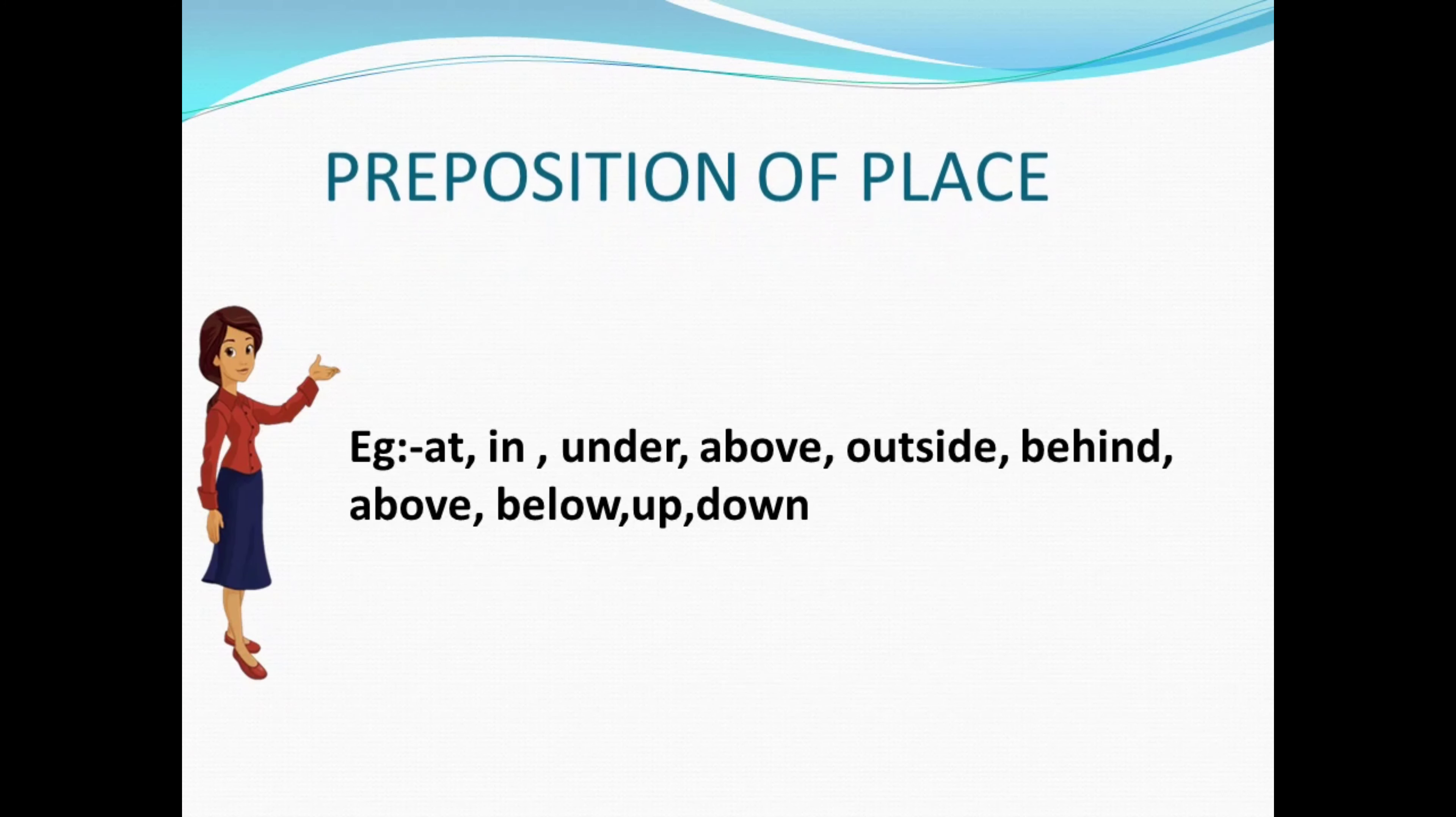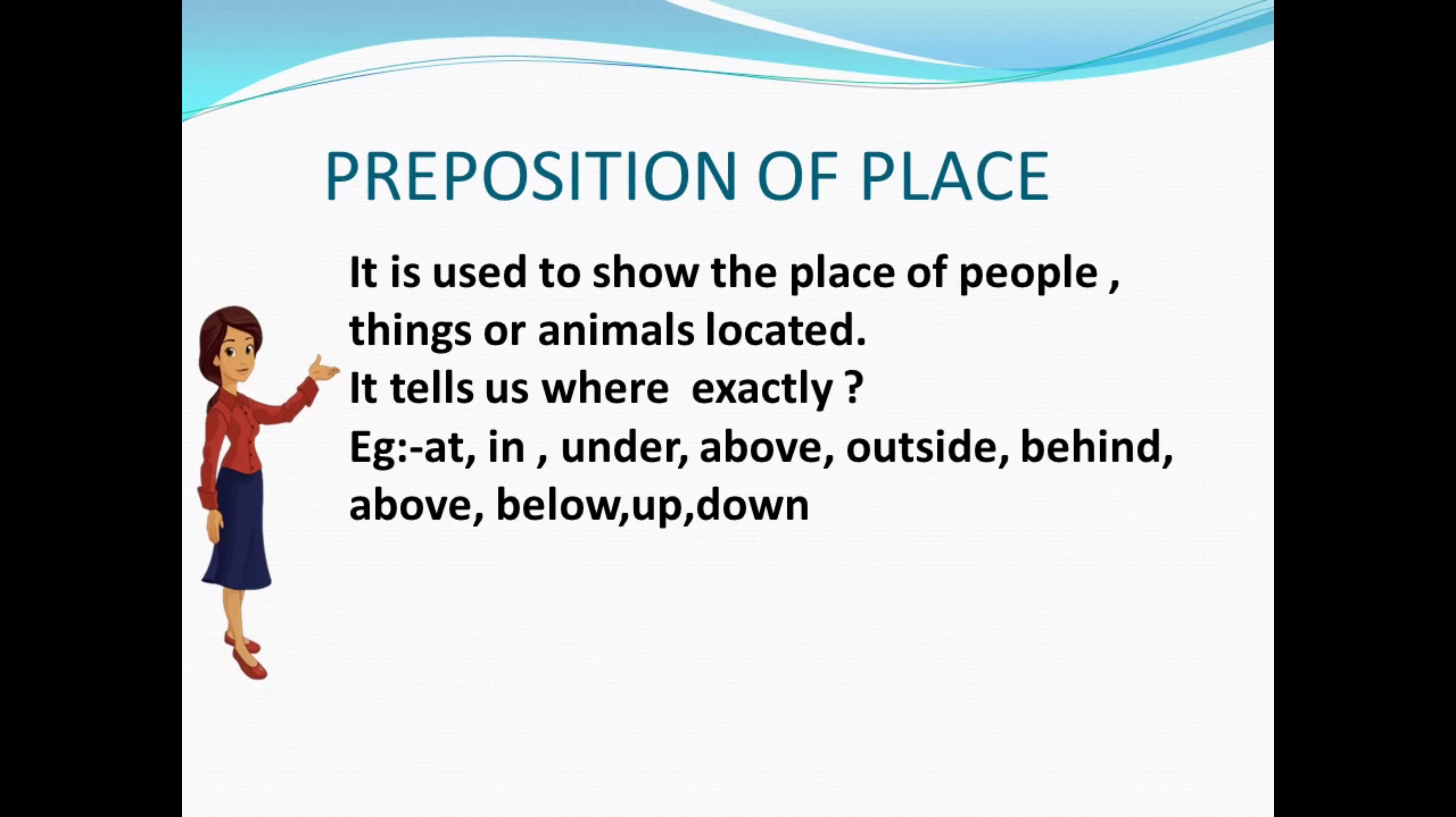Now let's look at the next type, that is preposition of place. Here it is used to show the place where people, things, or animals are located. It tells us where exactly. Examples: at, in, under, above, outside, behind, above, below, up, and down. One example of how you can frame using the preposition of place is 'The dog is resting under the tree.' So here 'under' is the preposition.